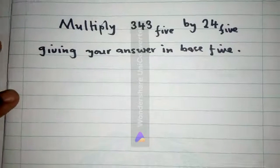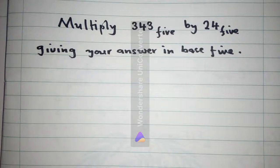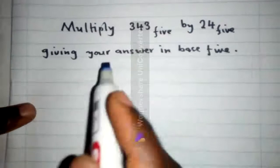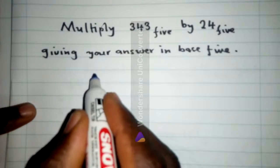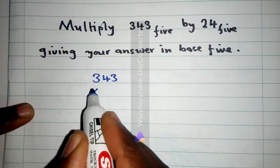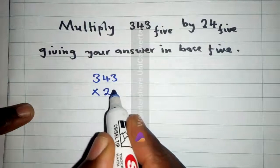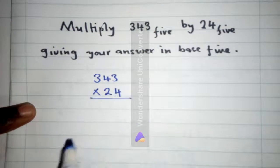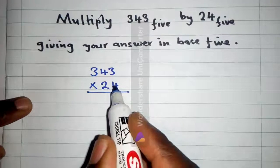Hi, welcome to my YouTube channel. I'll be showing you how to multiply base 5 numbers. This is base 5: 343 multiplied by 24. How do we multiply these?